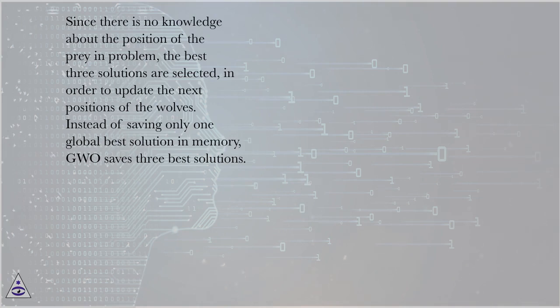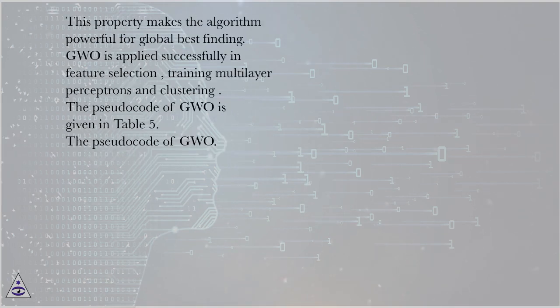Instead of saving only one global best solution in memory, GWO saves three best solutions. This property makes the algorithm powerful for global best finding.